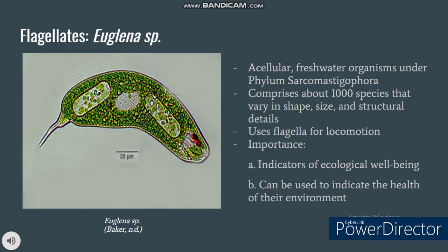Next, we have Euglena species. Euglena are unicellular freshwater organisms under the phylum Sarcomastigophora. The genus Euglena comprises about a thousand species that vary in shape, size, and structural details. For locomotion, Euglena moves using its flagellum, located on the anterior end, which twirls to pull the cell through the water. Euglena species are important because they are indicators of ecological well-being, mainly because they favor water rich in organic materials, and thus can be used to indicate the health of their environment.